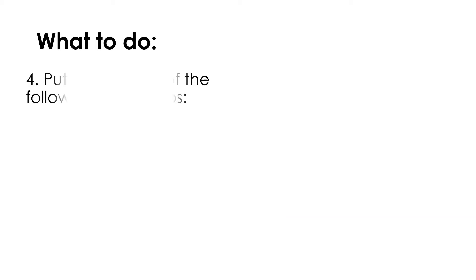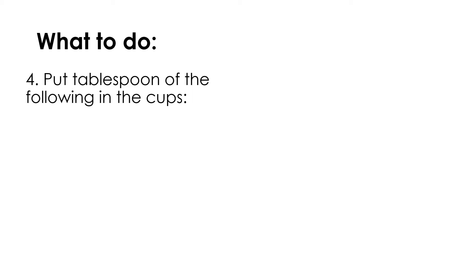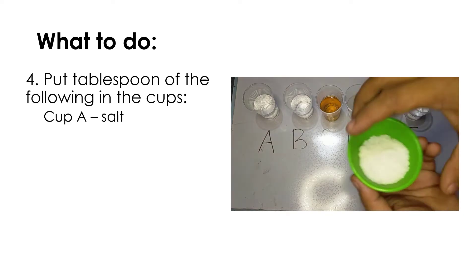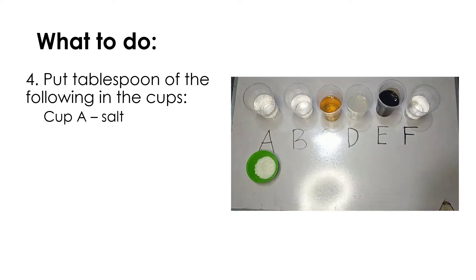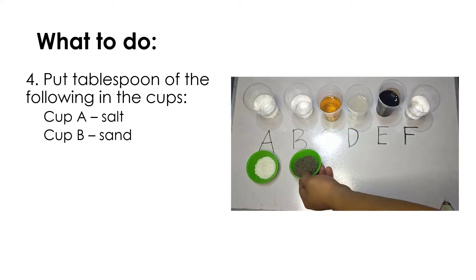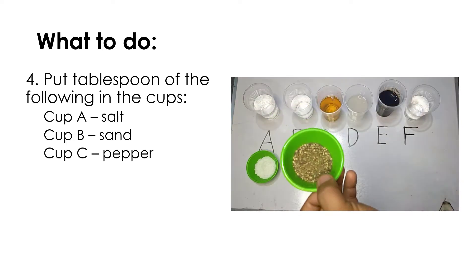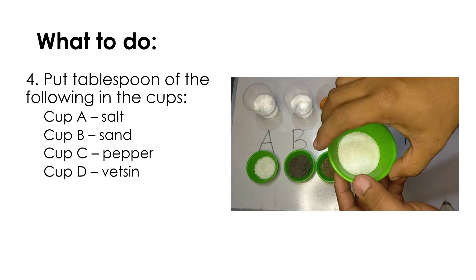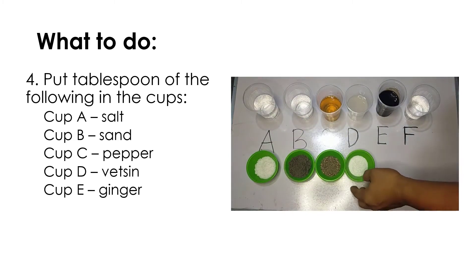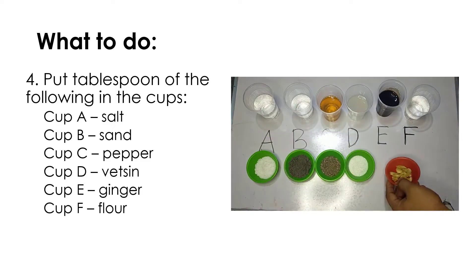Number four: put a tablespoon of the following into the cups — Cup A gets a tablespoon of salt, Cup B gets sand, Cup C gets pepper, Cup D gets vetsin, Cup E gets ginger, and Cup F gets flour.